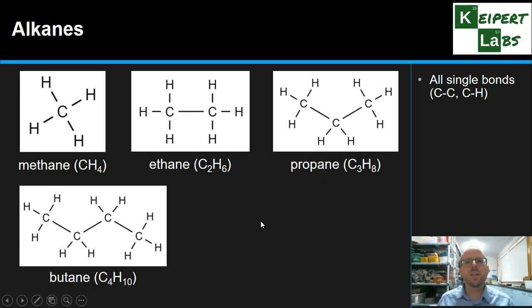So alkanes contain all single bonds, single covalent bonds between carbons and from carbons to hydrogens. Just as a quick point, you can only ever have a single bond between a carbon and a hydrogen. But between carbons, as we'll see a little bit later, you can get some different combinations. But alkanes contain only single bonds.